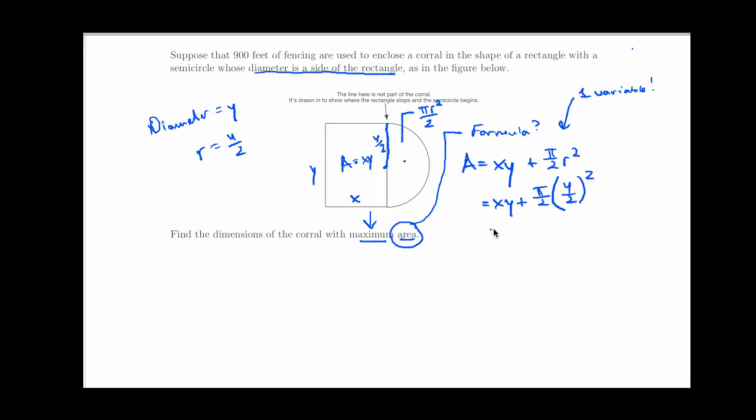Just to clean that up, that is xy plus pi over 2, and y over 2 squared is y squared over 4. So I have a slightly simplified version of my area formula. Area equals xy plus pi over 8 y squared. That's progress because I now have only two variables, but I still don't have one variable yet. So I need to do something to eliminate either x or y.